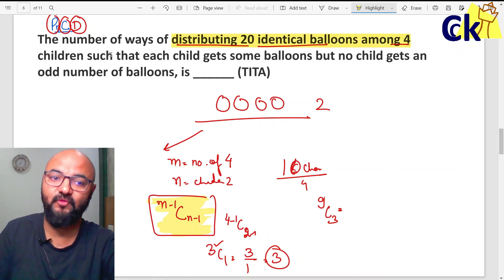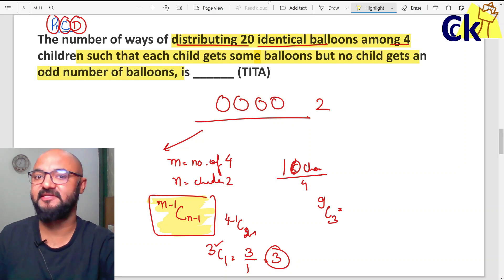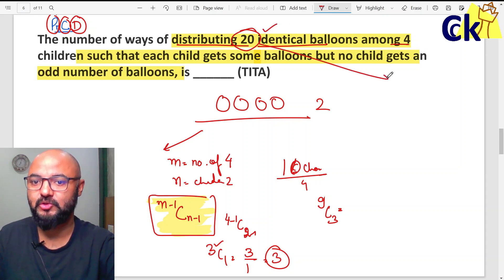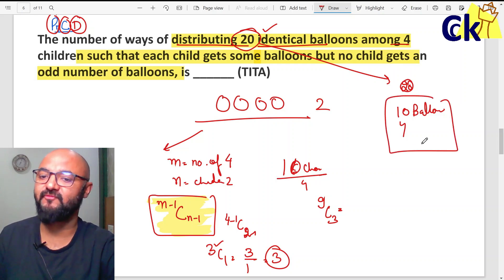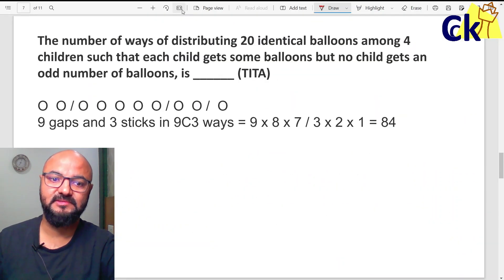Distributing 20 balloons among 4 children such that each child gets some balloons but no child gets odd number of balloons. Odd ni aana chahiye. 20 balloons are there, odd ni aana chahiye. Toh sab ko multiple of 2 karte hai. Can I change this question to instead of giving 20 balloons, 2-2 ke set mein there are 10 balloons. And among 4 children, 10 balloons among 4 children. How many ways? 9C3.